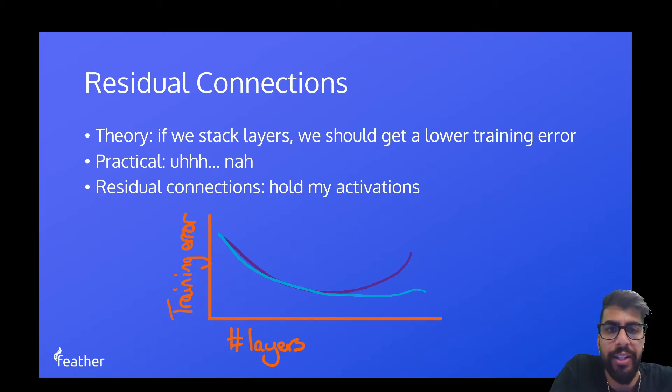Next up is residual connections. So before we get into this, just think about the theory of neural networks when you first learnt it. Basically, deeper layers equals more power. There should be some kind of meme here. But that's the kind of theory, right? Like if we just stack layers on top of each other or if we make them really deep, then we should get a lower training error. But the practicality of it is not really following suit.